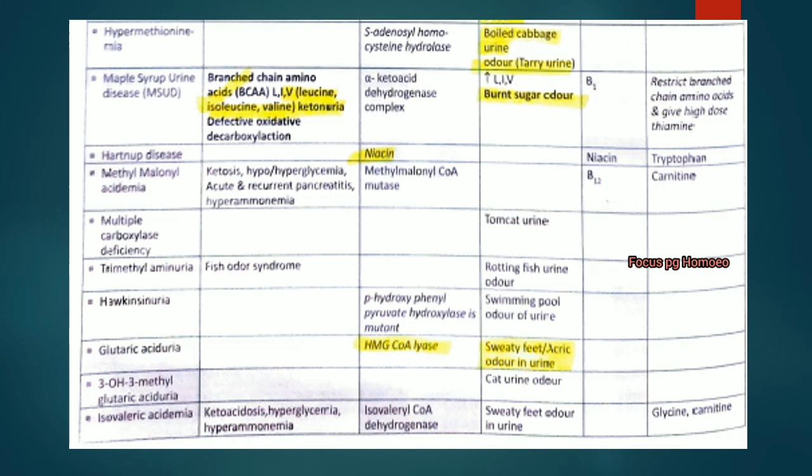Maple syrup urine disease (MSUD): deficiency of alpha-ketoacid dehydrogenase complex. There will be increased leucine, isoleucine and valine. Urine has burnt sugar odor. The patient presents with leucine, isoleucine and valine ketoaciduria with defective oxidative decarboxylation.